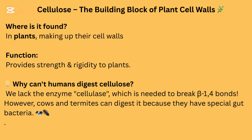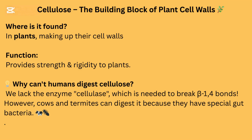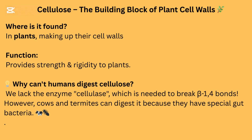Cellulose — the building block of plant cell walls. It is found in plants, making up their cell walls. Structure: composed of beta-D glucose units linked by beta-1,4 glycosidic bonds, forming long unbranched chains. Function: provides strength and rigidity to plants. Why can't humans digest cellulose? We lack the enzyme cellulase, which is needed to break beta-1,4 bonds. However, cows and termites can digest it because they have special gut bacteria.